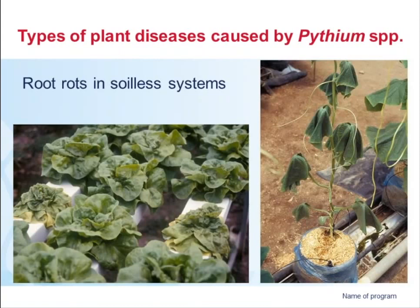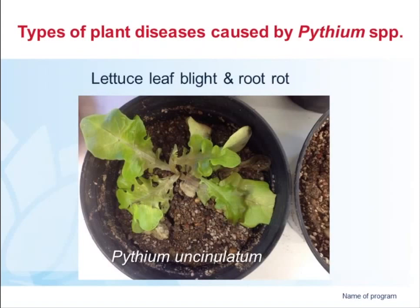Here's a couple of others in soilless systems — collapsing lettuce and cucumbers in sawdust substrate. Water is the key, with the Pythium coming in on the water supplied to those plants. And there's that case where Pythium can come up above the ground — this is a lettuce seedling affected by Pythium uncinulatum. That plant collapsed within a day, and many of the others had already collapsed. So it's a seedling disease where the Pythium is actually right up in the leaf as well as being down in the roots.